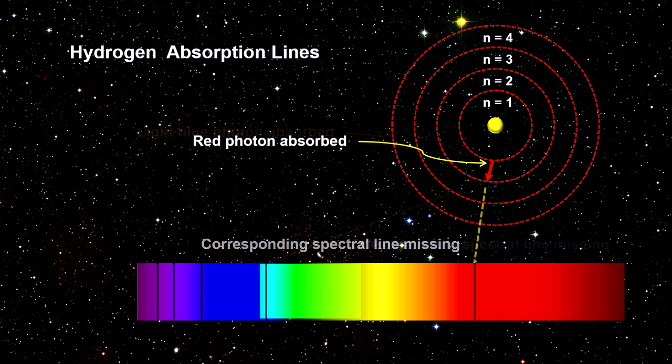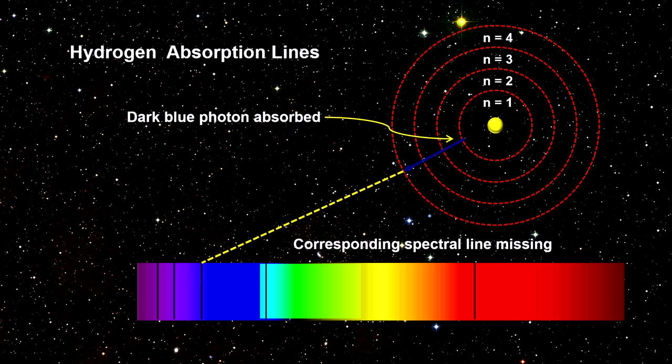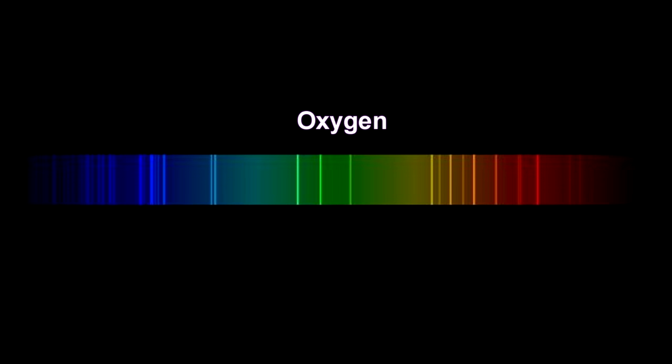This creates absorption lines in a star's spectrum as light from the star travels through the star's atmosphere. Every atom and molecule has its own spectral line signature, so by observing the absorption lines in a star's spectrum, we can tell what elements are present.